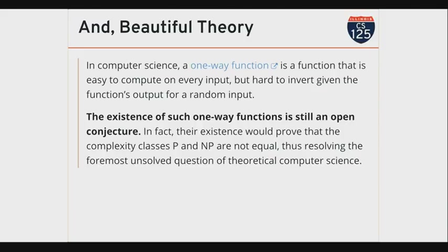No one has been able to prove that these one-way functions exist. We have functions that seem to act this way, but no one has ever proven there's no way to invert a value produced by SHA-1, SHA-2, or any of these hash functions. If you could prove that, one of the results would be that you would have proven that P and NP are not equal. So the existence of this function has this deep connection to the most important theoretical problem in computer science — kind of cool.